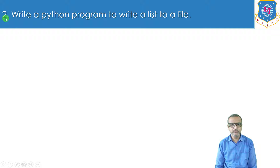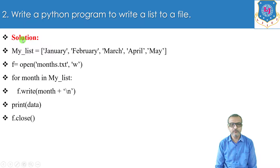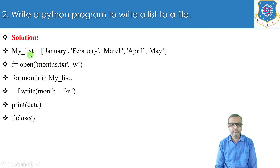Now we will see program number two: write a Python program to write a list to a file. In this program we will write a list to a file. We are going to write the elements of the list into the file named months.txt. We have created one list that is my_list, and the elements are Jan, Feb, March, April, and May.